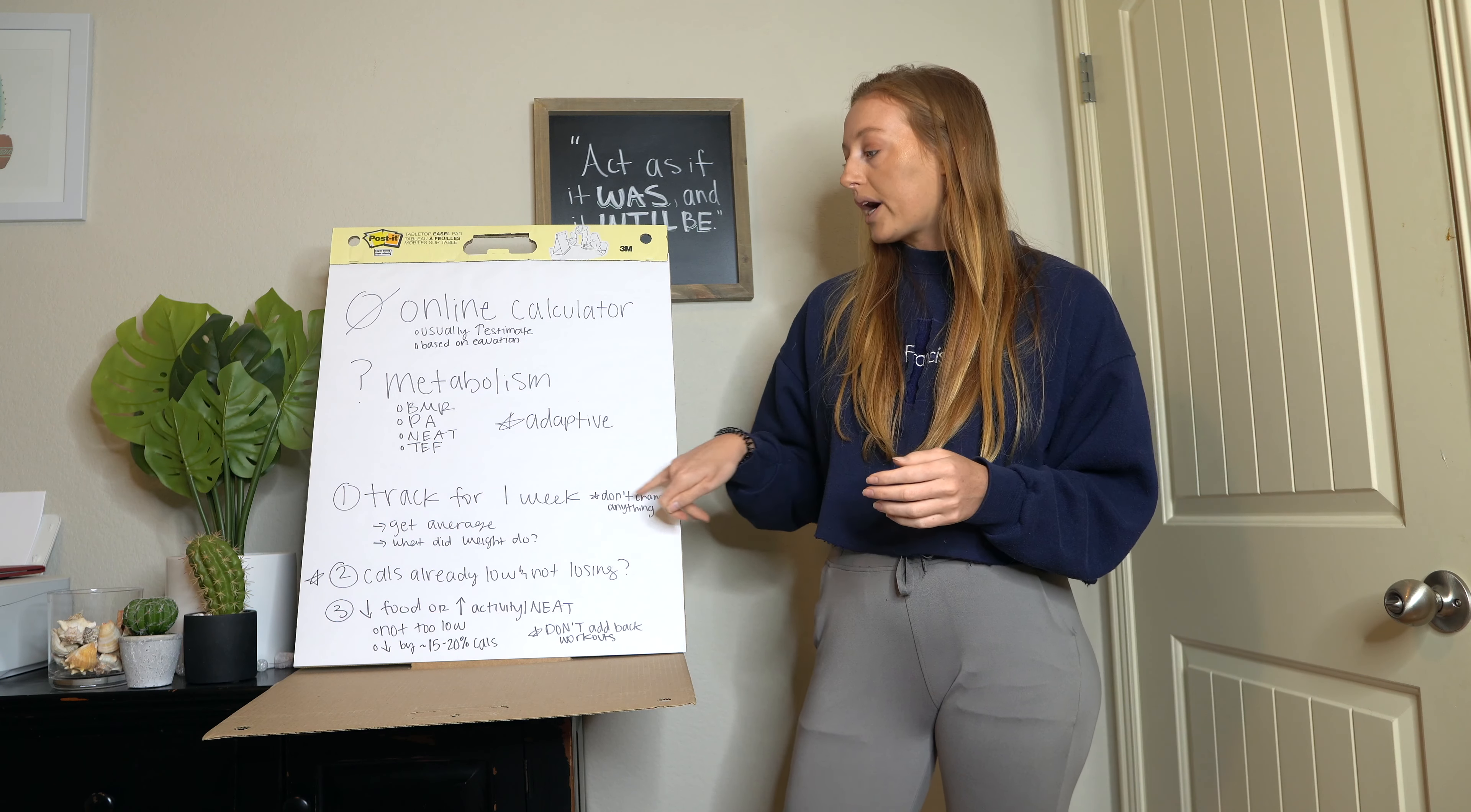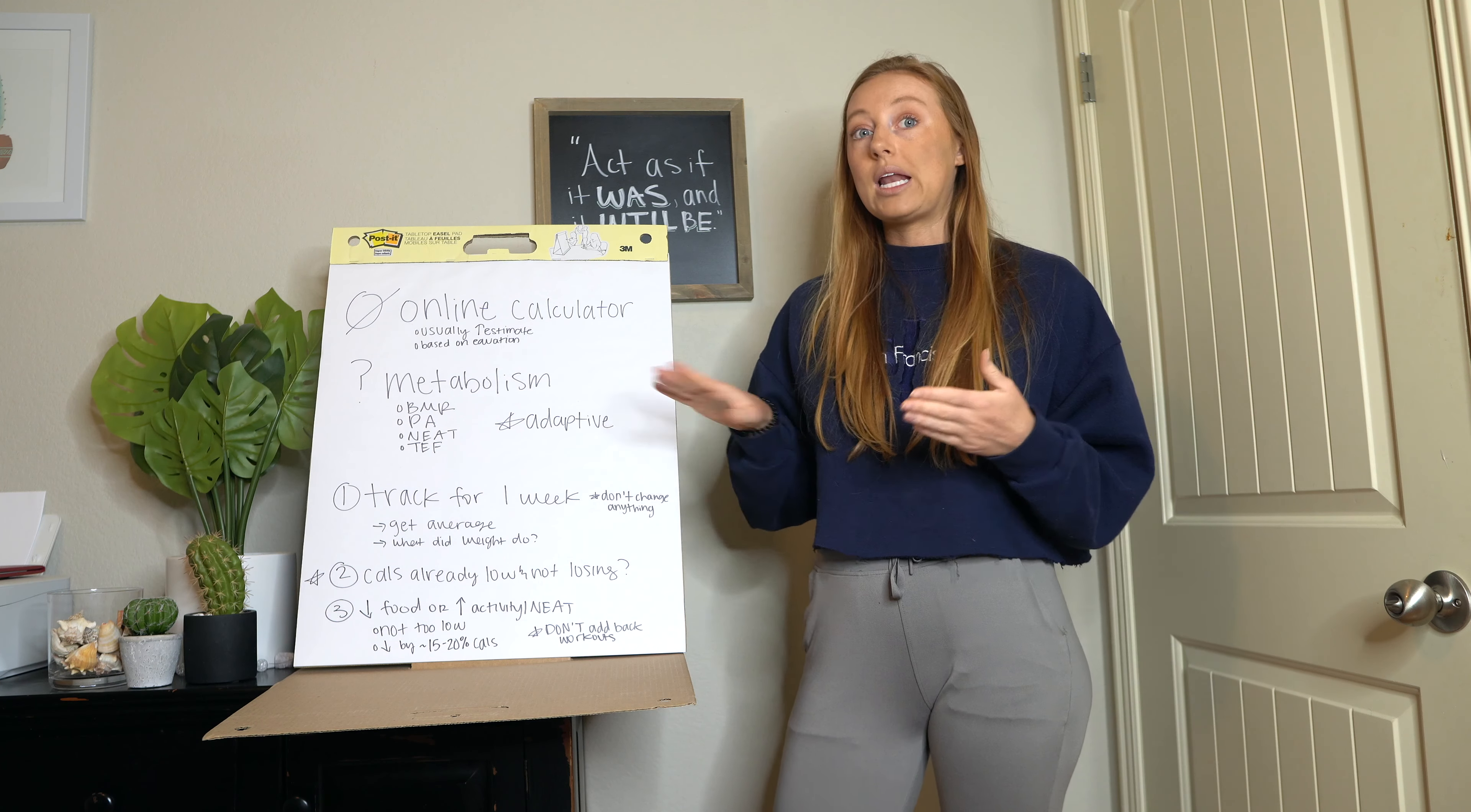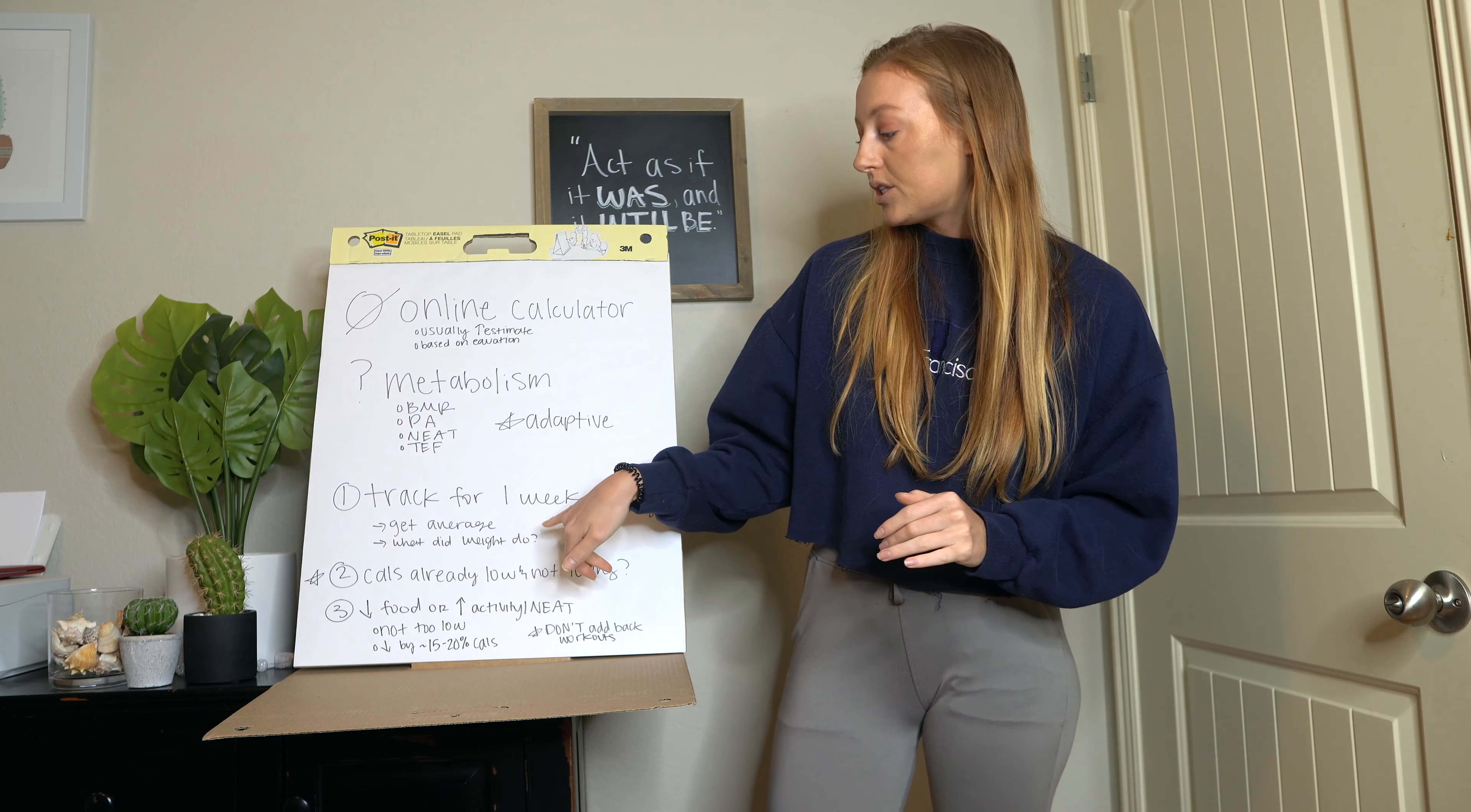Getting into how are we going to figure out our deficit if we're in a good place to go into one. So the first thing that we're going to do is track our food for a week. We're going to track our food for one week, and we're not going to change anything. So if you normally have a whole bag of chips at night, keep eating a whole bag of chips at night. This is food and drinks too. So you're going to track for one week, and then you're going to get an average of all of those days.